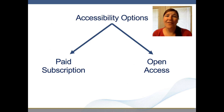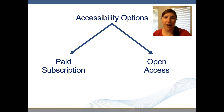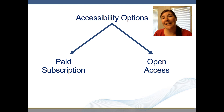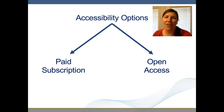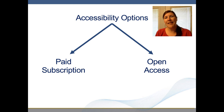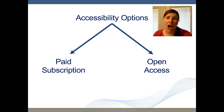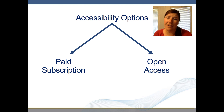Irrespective of the soundness and novelty of your research, reaching your target audience depends largely on readership accessibility options in the journal. Selecting the appropriate level of accessibility for your paper may seem straightforward, but it is generally constrained by whether the journal or publisher offers these options and journal fees.